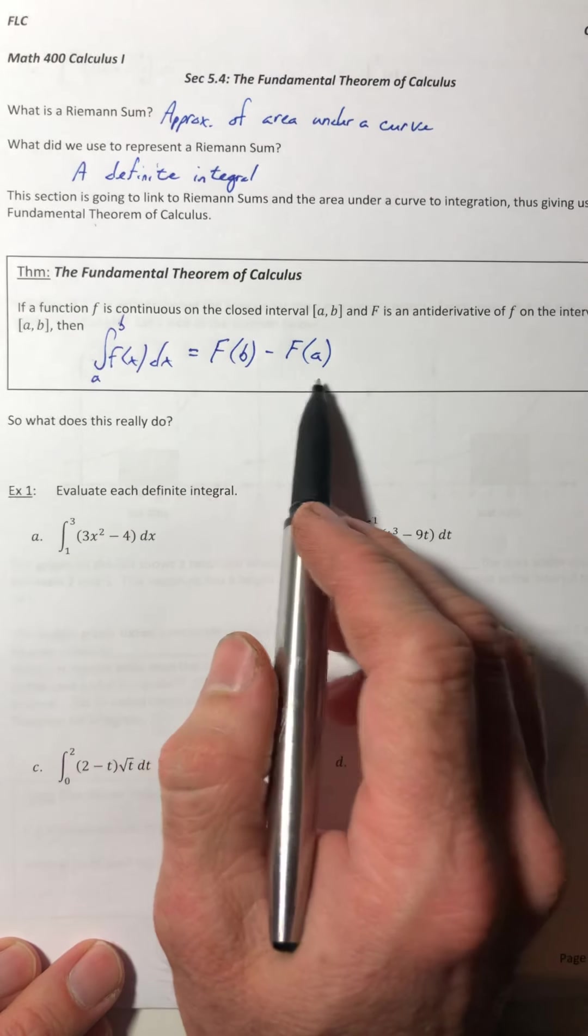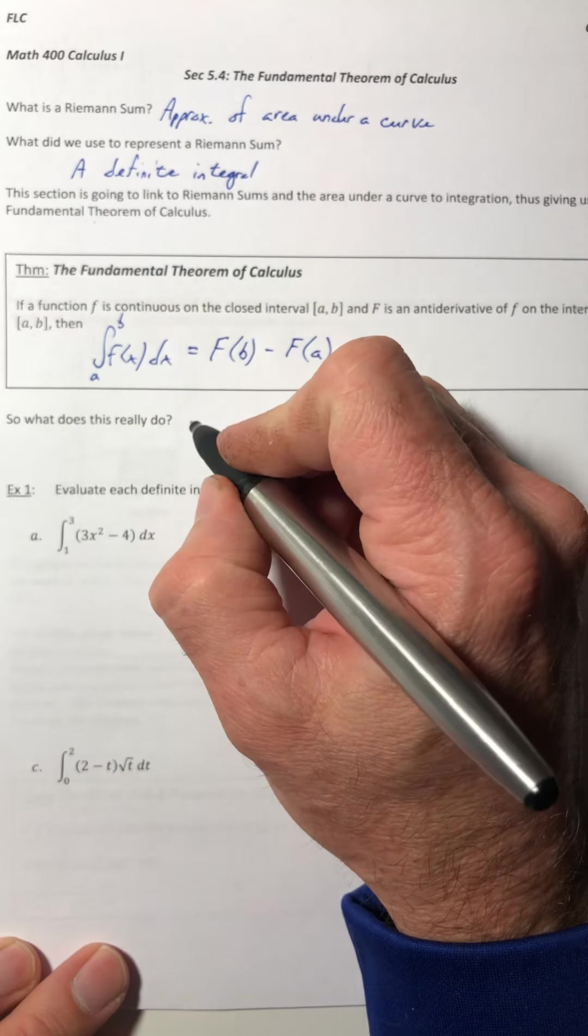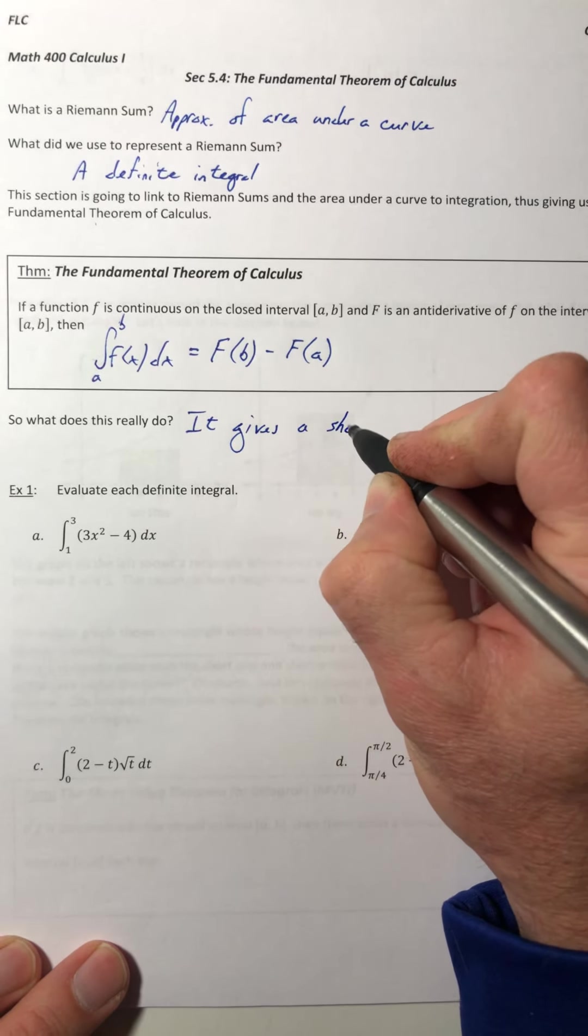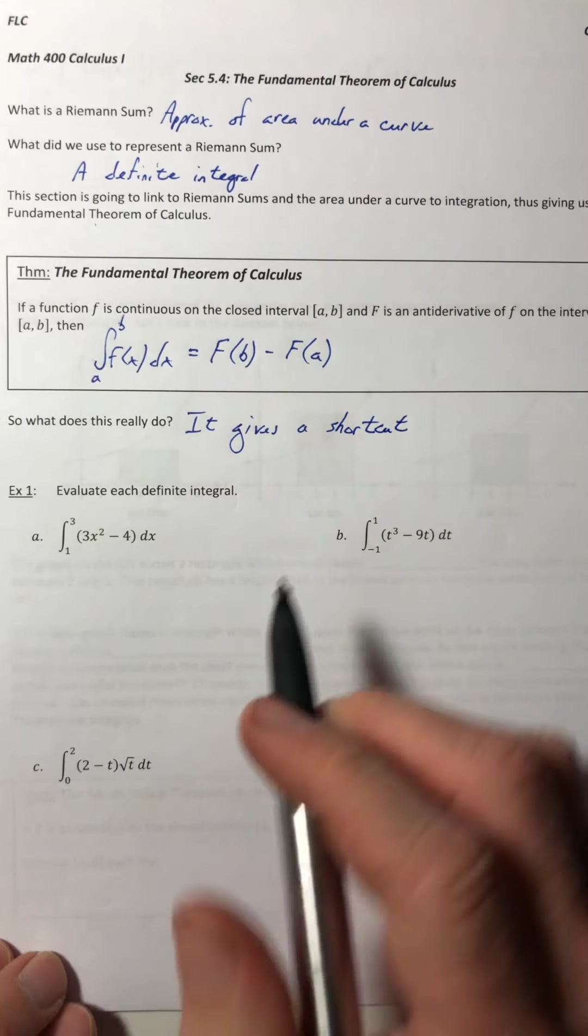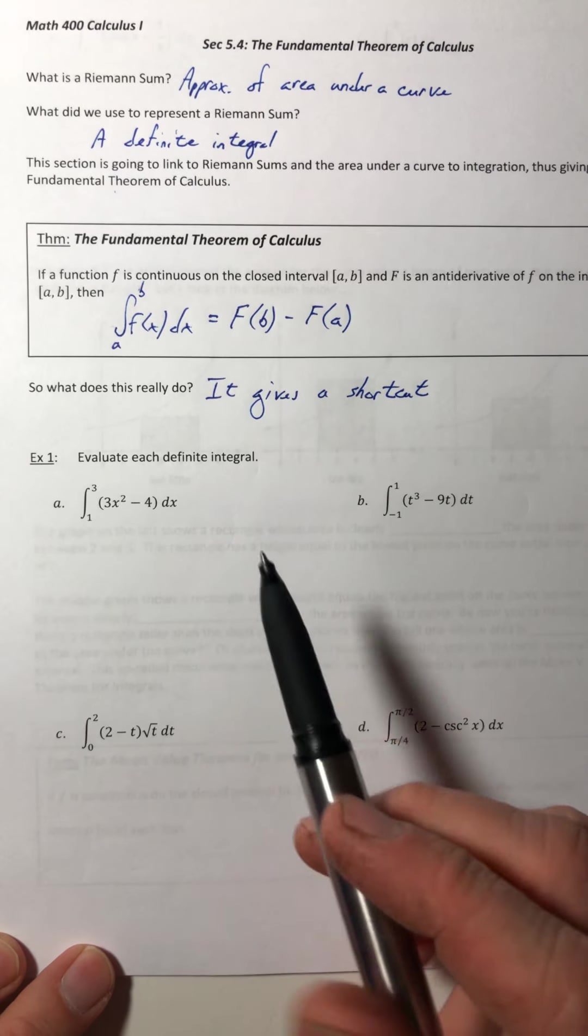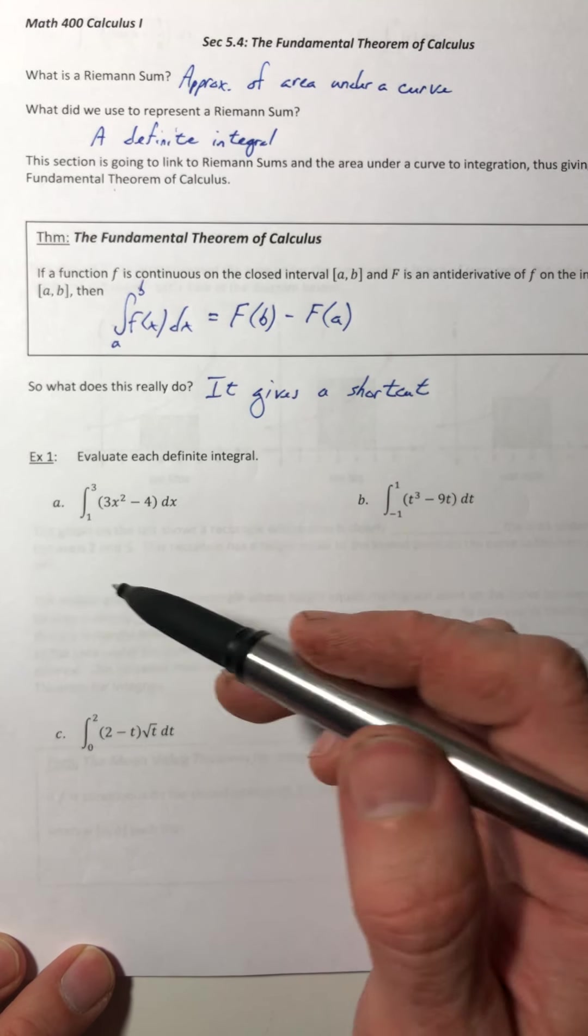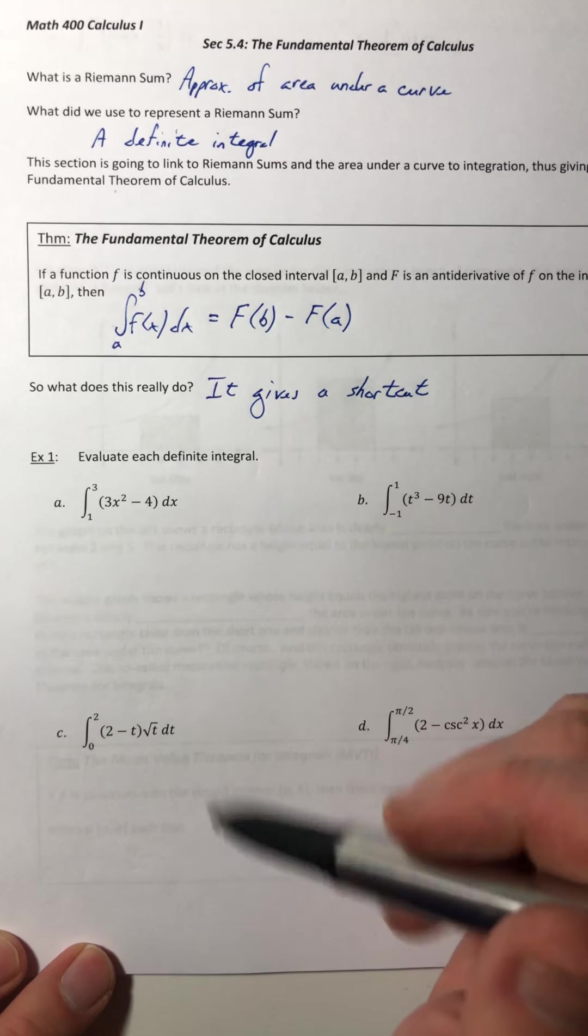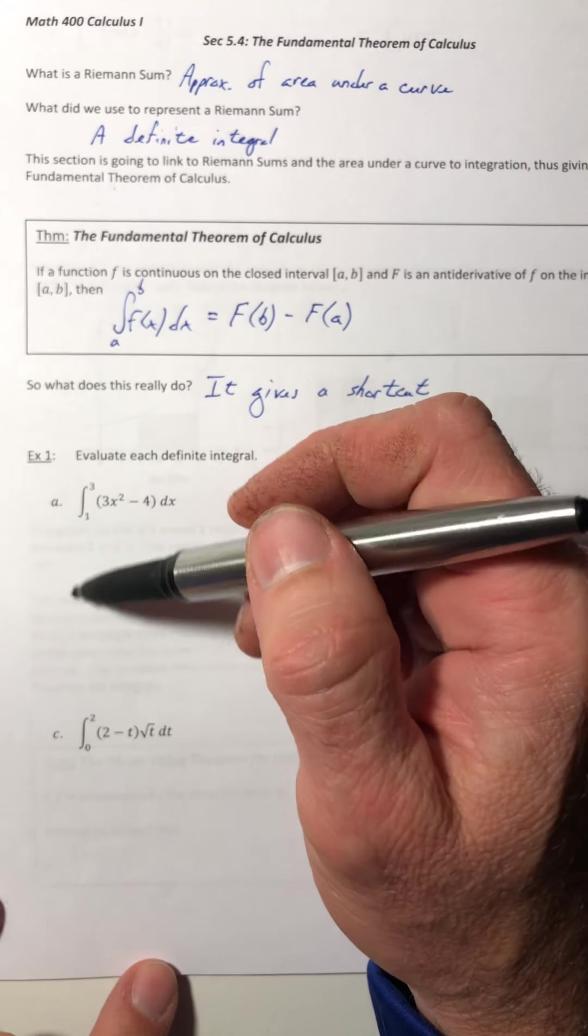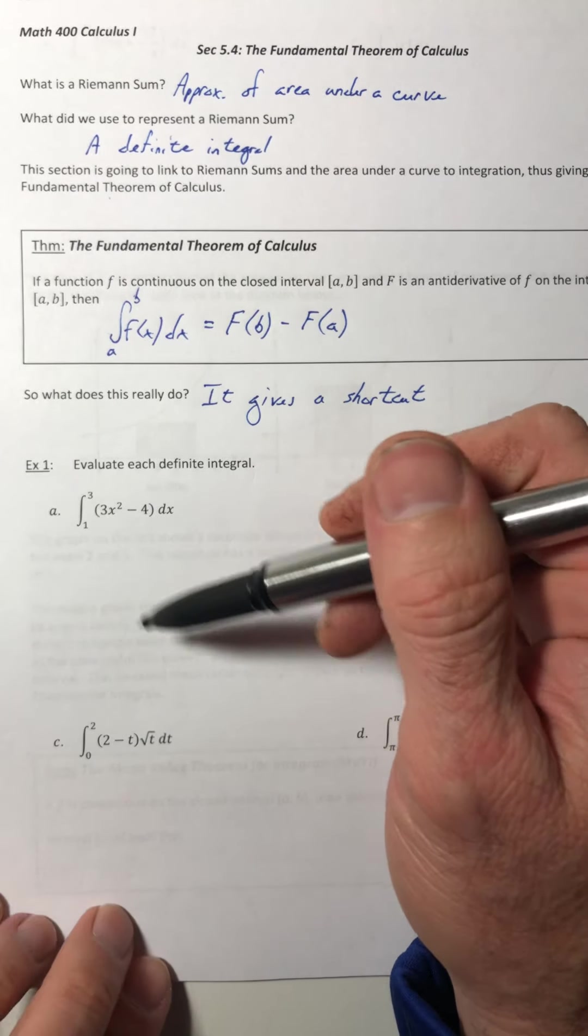So what this did, even though it doesn't really look like it right now, but what it does is it gives a shortcut. Because a lot of times our curves are not nice curves. They don't really have a good geometry or geometric formula for its area to use. They don't always make a square or a triangle or something like that. They're like parabolas and stuff.